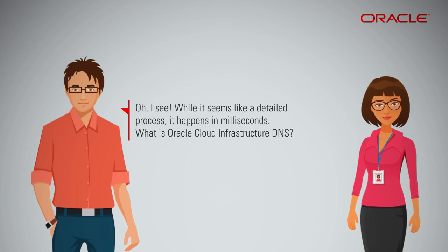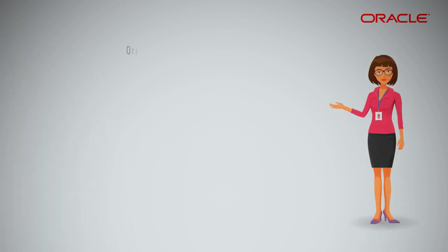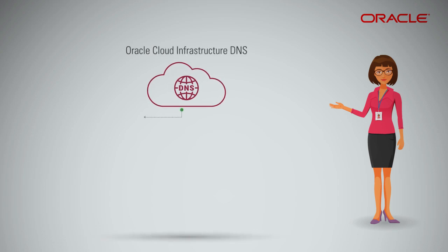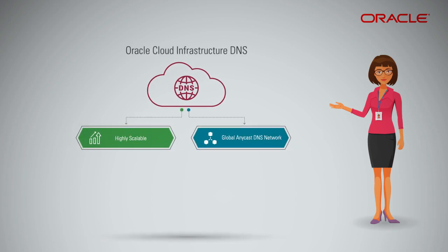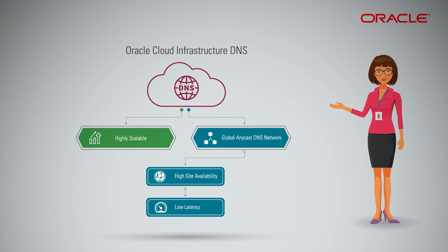While it seems like a detailed process, it happens in milliseconds. What is Oracle Cloud Infrastructure DNS? Oracle Cloud Infrastructure DNS is a highly scalable, global Anycast domain name system network that assures high site availability and low latency, resulting in a superior end-user experience connecting to Oracle Cloud Infrastructure, third-party, and private assets.